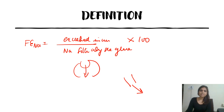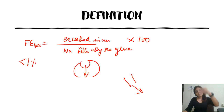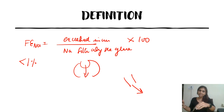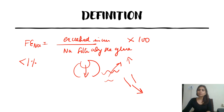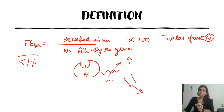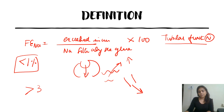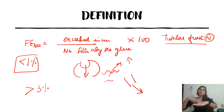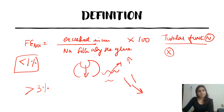What does it mean when fractional excretion of sodium is less than 1%? It means that out of the sodium filtered along the glomeruli, very little is getting excreted in urine — which means most of what has been filtered is getting reabsorbed in the renal tubules. If reabsorption is high, tubular function is normal. Conversely, if fractional excretion of sodium is more than 3%, most of what is being filtered is getting excreted in urine, which means reabsorption along renal tubules is minimal — tubular function is affected.